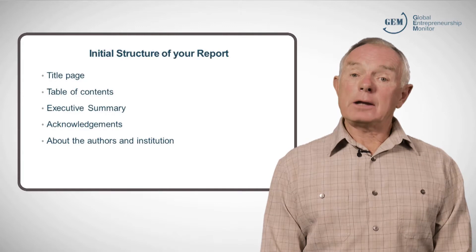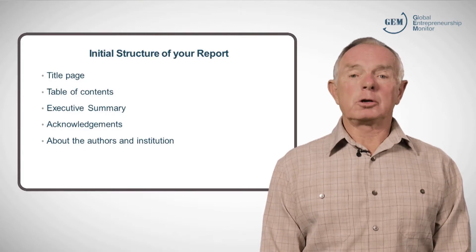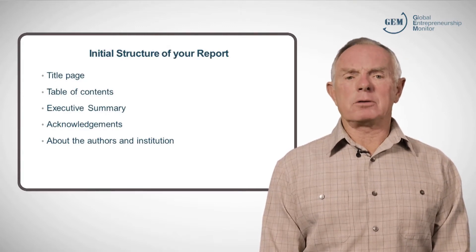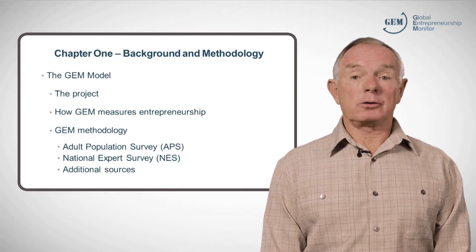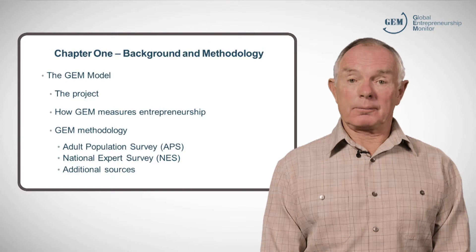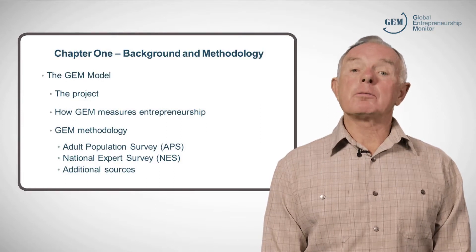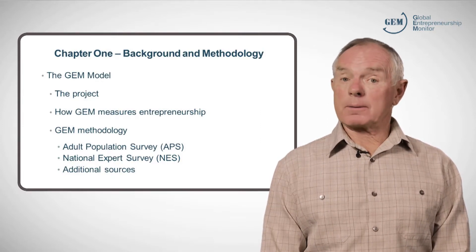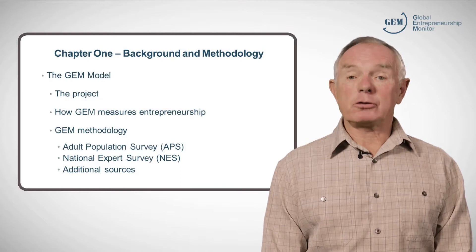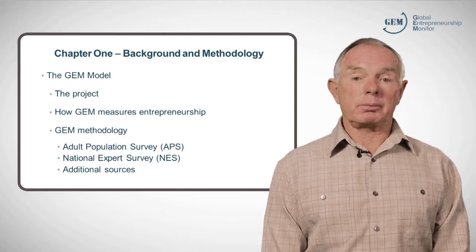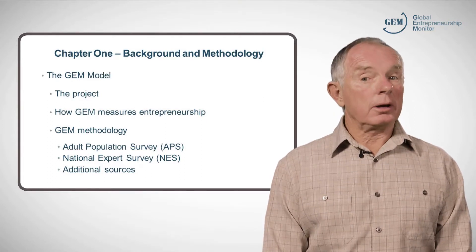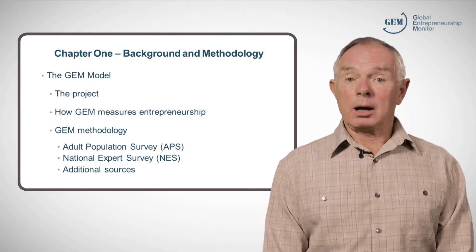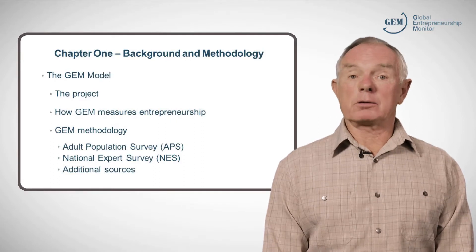The length of the finished report should be a maximum of 60 pages. The first chapter should be titled the GEM model and will include information about the project, how GEM measures entrepreneurship, and the GEM methodology, which explains what the APS and NES are and what roles they play in the report.